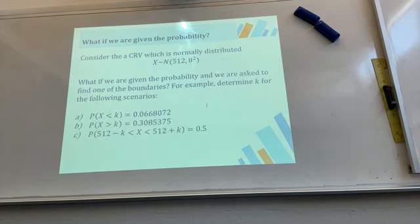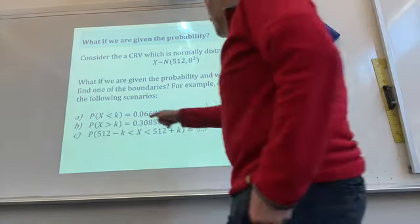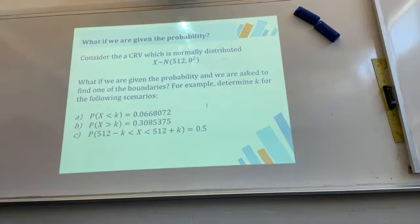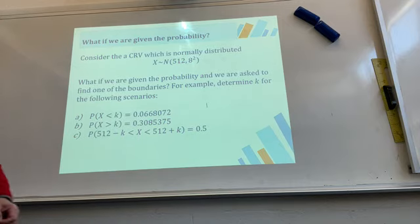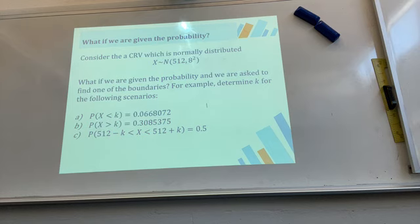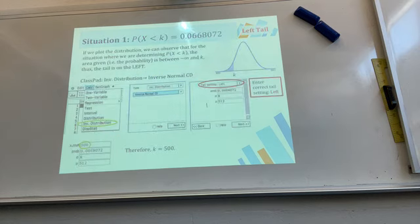Now: what if you're given the probability and need to find k — the actual value? We reverse the process and use the Inverse Normal CDF. To do this, you need to recognize the tail type: whether it's a left tail, right tail, or center.